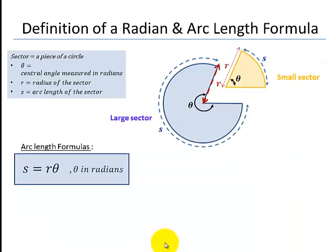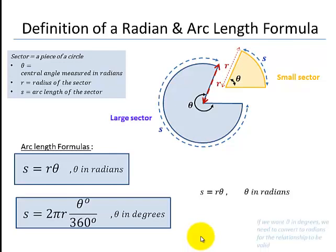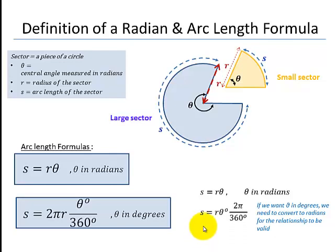We can also look at this formula when theta is in degrees instead of radians. In that case, the formula becomes 2πr times theta in degrees over 360. Starting from our original radian definition, we convert degrees to radians using the unit ratio, keeping arc length and radius the same. Rearranging gives us the formula in the box.